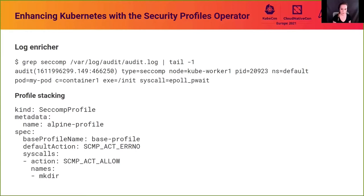It's also worth mentioning a couple of other features. We have the log enricher feature, which supplements audit logs with annotations that help give context to audit events and lets you trace events back to the Kubernetes workloads that generated them. We also have the profile stacking feature, which is an inheritance model for SecComp profiles that allows you to compose application-specific profiles on top of a standardized base. For example, you could create a base profile for all system calls that the container runtime needs to launch a container, and then a slim profile with just the system calls your specific application needs, which can be composed into one single profile.